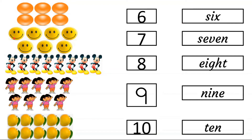How many smellies are here? 1, 2, 3, 4, 5, 6, 7. S, E, V, E, N.